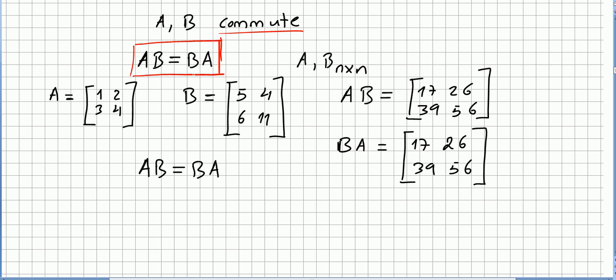Not always this happens. You change one number here and everything changes. So when this happens, and most of the time it doesn't, when this happens we say that matrix A and B they commute.